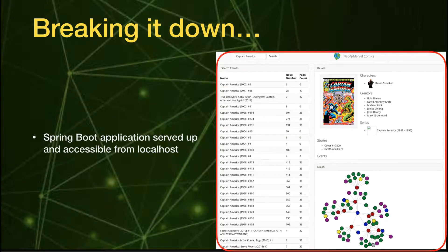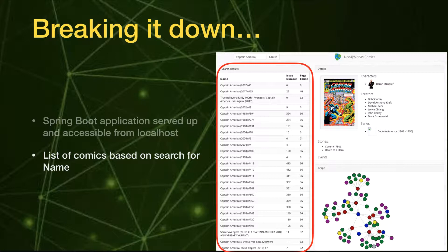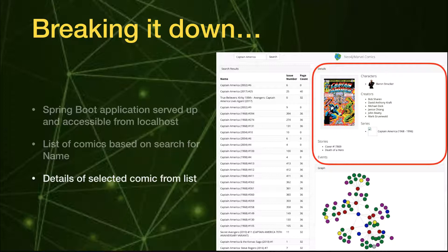We need a Spring Boot application accessible via web page from localhost. We want to search comics and get a list of results back based on what you search for — you'll see those results on the left-hand side. If a user selects one of the comics from the list, they want more information about that particular comic.